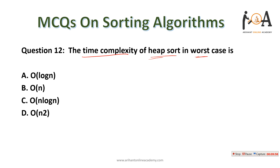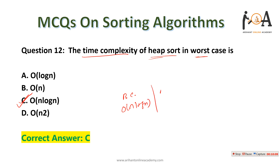The next question: what is the time complexity of heap sort in the worst case? Heap sort worst case is O(n log n). In fact, best case is also O(n log n), average case is also O(n log n), and worst case is also O(n log n). Make note of this.